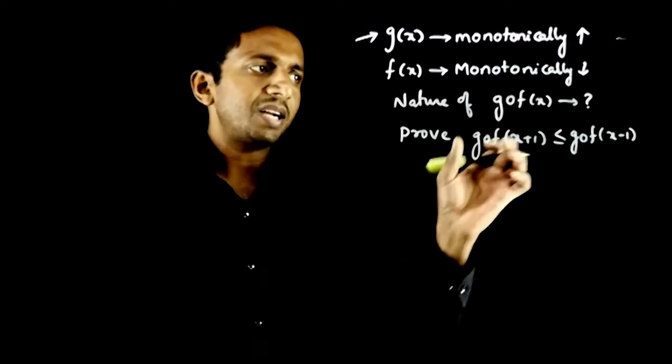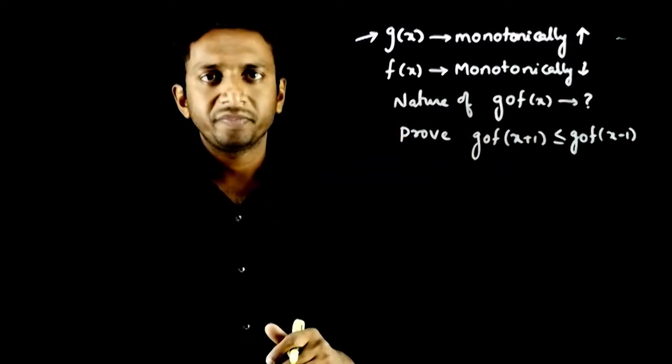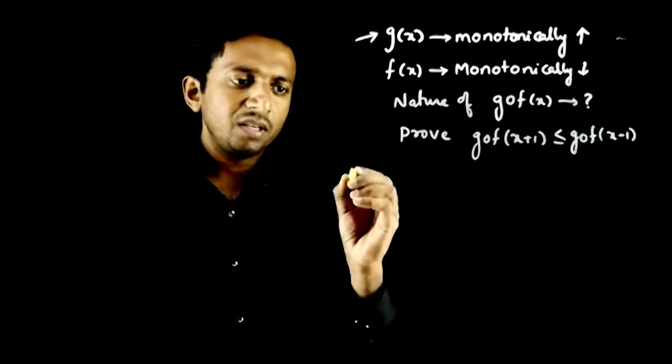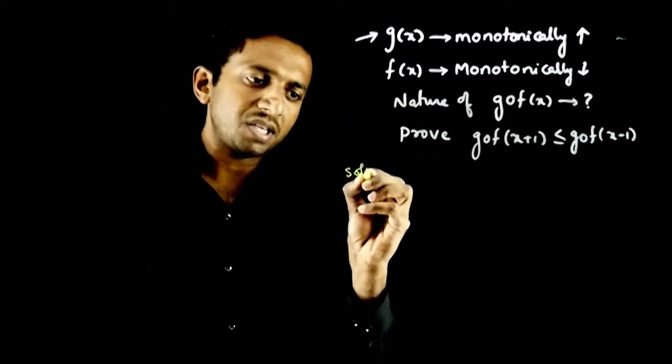So first let us try to analyze the nature of this. gof is monotonically increasing, f(x) is monotonically decreasing. So how do we start?